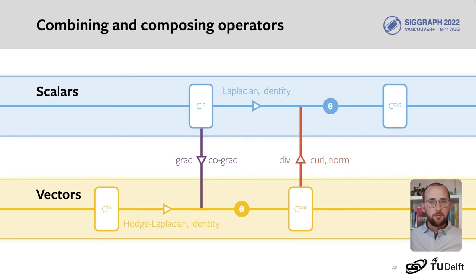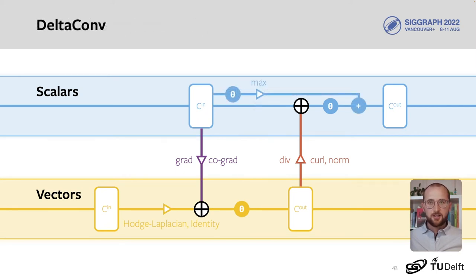DeltaConv combines and composes the operators by concatenating their outputs along the feature dimension and feeding them to multilayer perceptrons. We use maximum aggregation instead of Laplacian in the scalar streams, as this is a very effective analogy of Laplacians for learning on point clouds, as demonstrated by PointNet++ and EdgeConv.